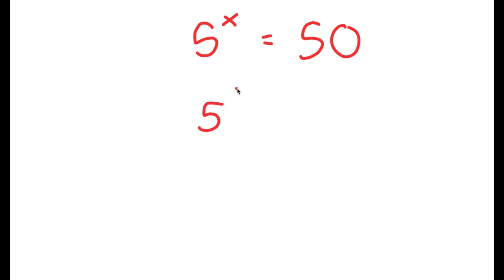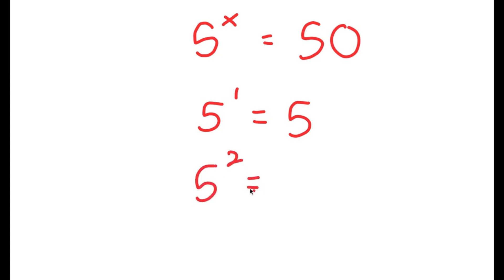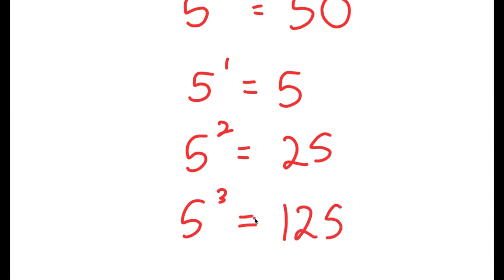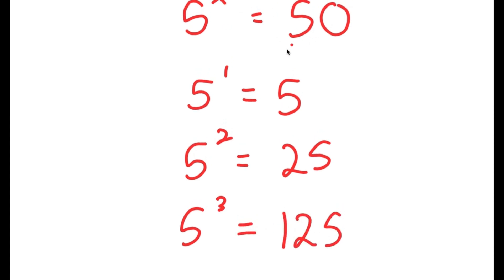If x is 1, then I get 5 to the power of 1, which is equal to 5, and this is too low. If x equals 2, I get 5 to the power of 2, which is 25, and this again is too low. Now if x equals 3, then I have 5 to the power of 3, which is 125, and this is way too high.